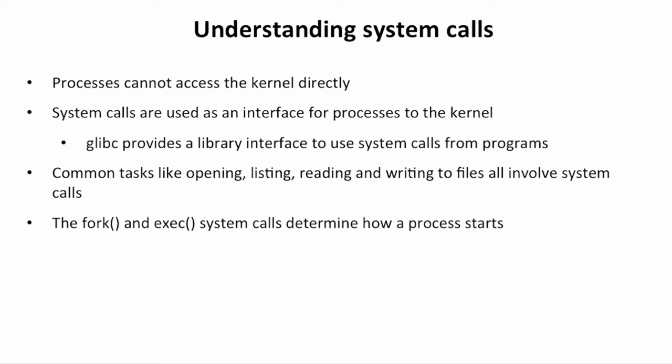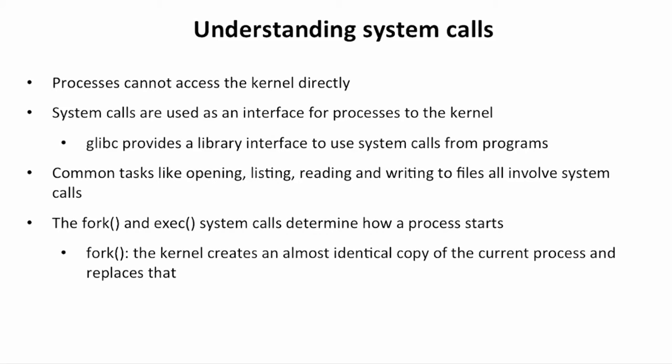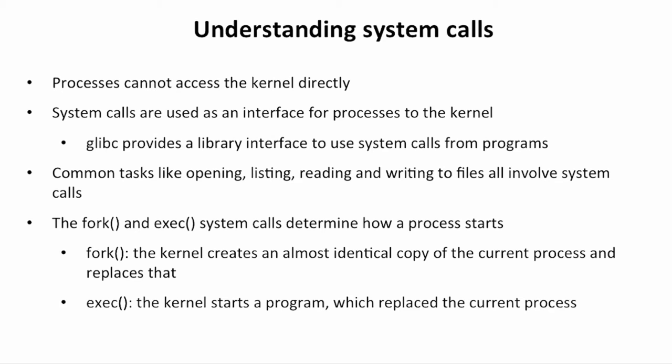Two of the most important system calls are fork and exec, and these determine how a process is starting. Fork is what happens when the kernel creates an almost identical copy of the current process. That's how a process starts a child process - it will first copy itself and next remove its code to be replaced by the code of the child process. And then we have exec, where the kernel starts a program which replaces the current process.